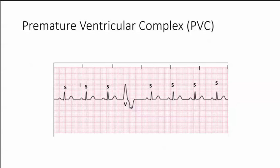Now let's look at the rate. After this sinus rhythm, it should occur right here. So this is a premature ventricular rhythm at a rate of 83 beats per minute.